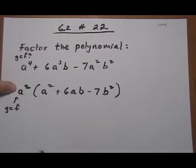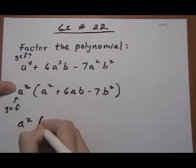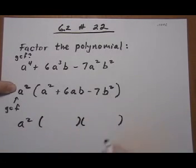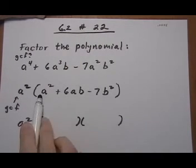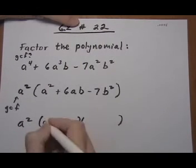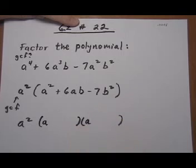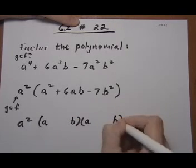Alright so this a² is just going to tag along. And then we're going to have binomial factors because we are factoring a trinomial. And because we have an a² at the beginning and a b² at the end, we know we want a and a at the beginning, b and b at the end.